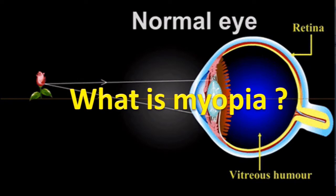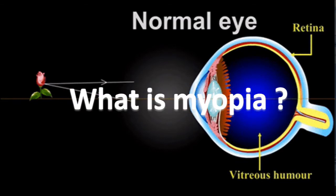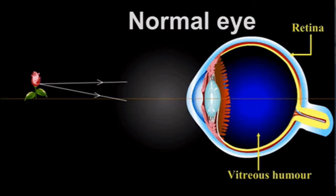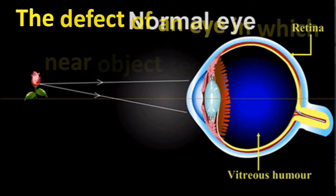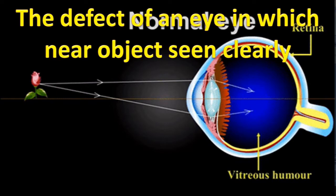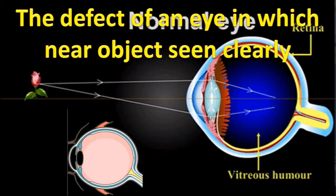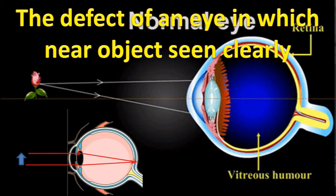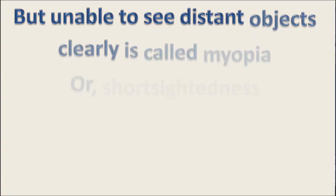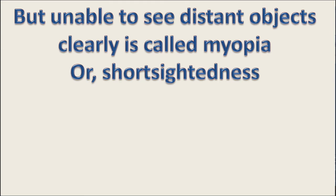What is myopia or short-sightedness? It is the defect of an eye in which near objects are seen clearly — that is, light coming from near objects is focused on the retina. Here, light converges by the eye lens onto the retina. But the inability to see distant objects clearly is called myopia or short-sightedness.